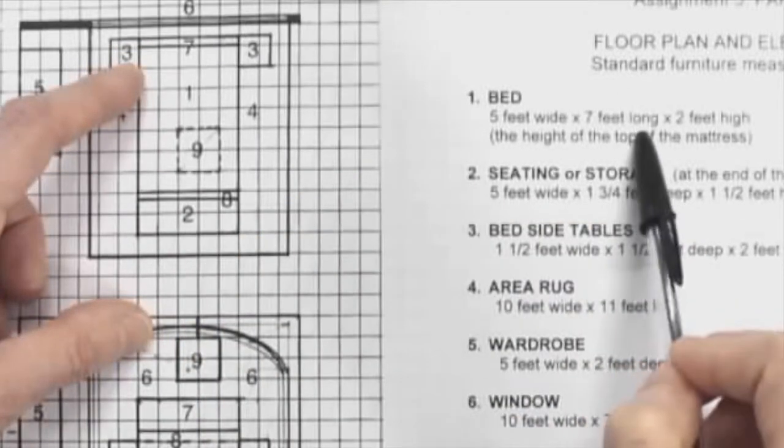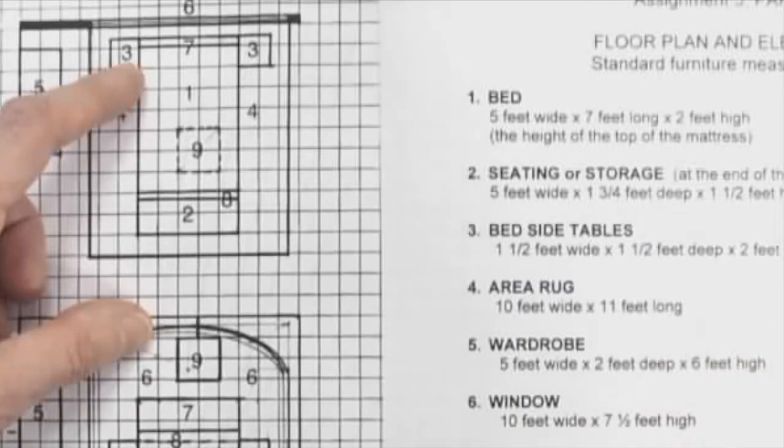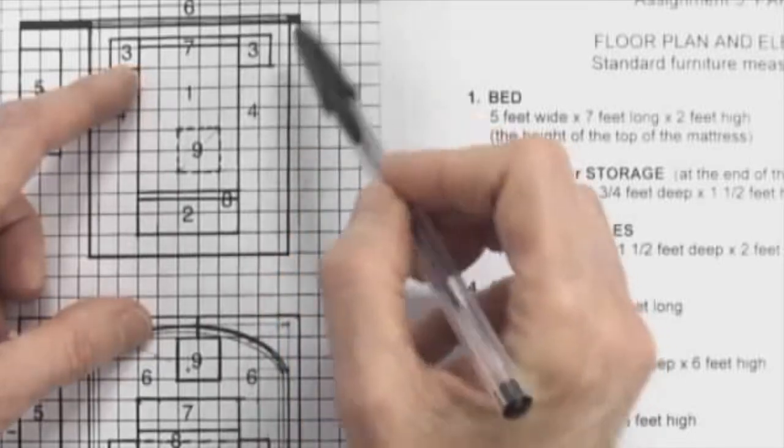It's important for you to know that the headboard is half a foot away from the window wall. And you can't tell that from this form, these lists. You have to go to your floor plan to know that.